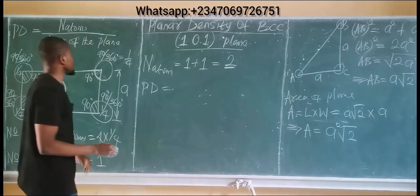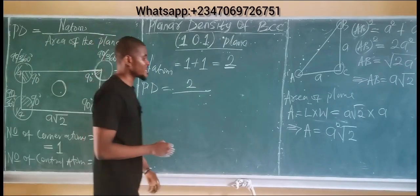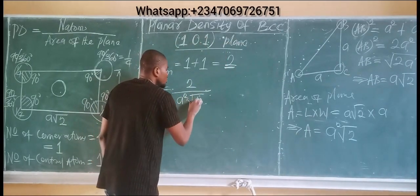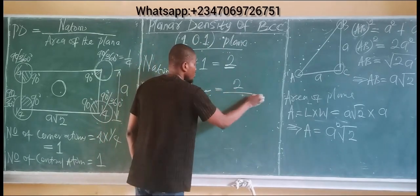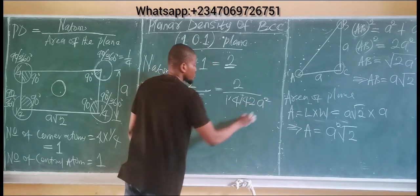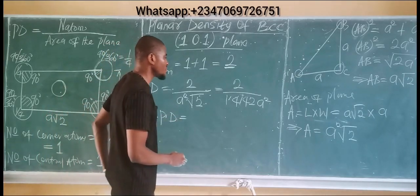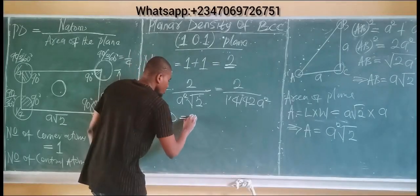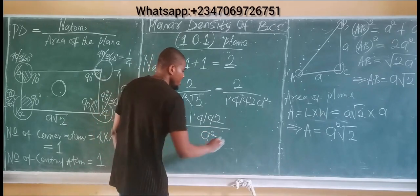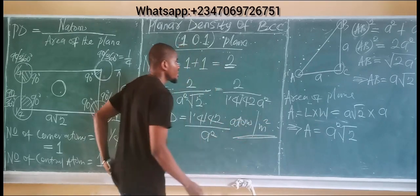The planar density = number of atoms / area of plane = 2 / (a²√2). Since √2 = 1.4142, this gives 2 / (1.4142 a²) = 1.4142 / a². So the planar density of the BCC 101 plane is 1.4142 atoms per square meter (per a²).